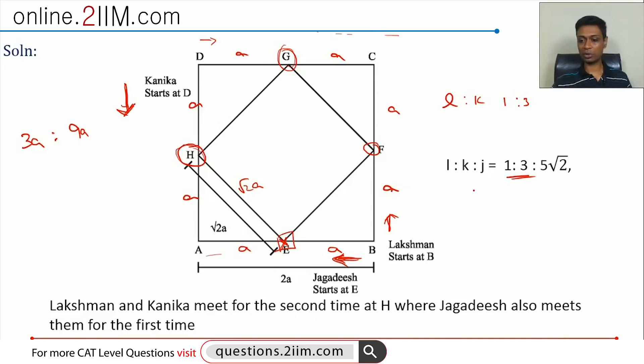The ratio of Lakshman to Jagdish speed, L is to J, is 1 is to 5√2. I'm just taking Lakshman to Jagdish; I could have taken Kanika to Jagdish, it won't matter. The distances traveled by them in the same unit of time will also be in the same ratio. So if L travels 3A, how much would J have traveled? 3A into 5√2, or 15 times A√2.